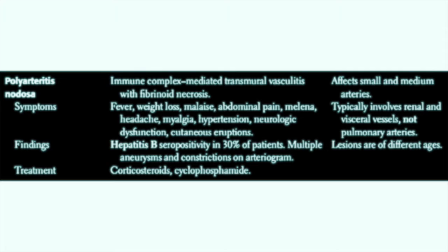Polyarteritis nodosa is an immune-complex-mediated transmural vasculitis with fibrinoid necrosis. It affects small and medium arteries, typically involving the renal and visceral vessels but not the pulmonary arteries. The lesions are of different ages on pathology. Symptoms include fever, weight loss, malaise, abdominal pain, melena, headache, myalgia, hypertension, neurologic dysfunction, and cutaneous eruptions. 30% of patients with polyarteritis nodosa have hepatitis B seropositivity.